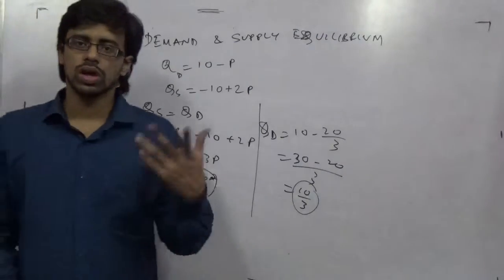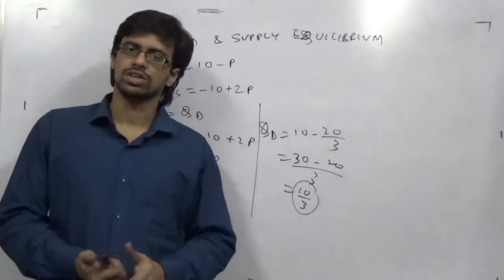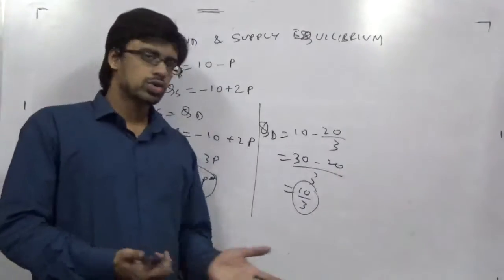You can ask me, how is the demand quantity in fraction? Obviously, it is like 3 kg 33 grams. This is the formula.